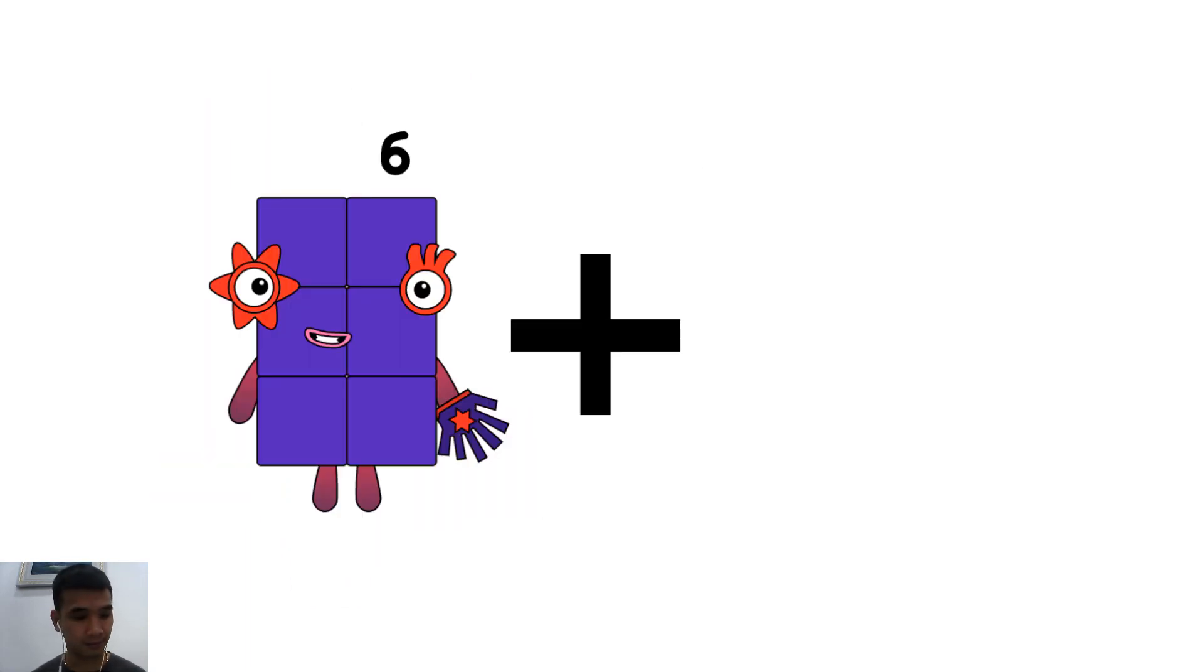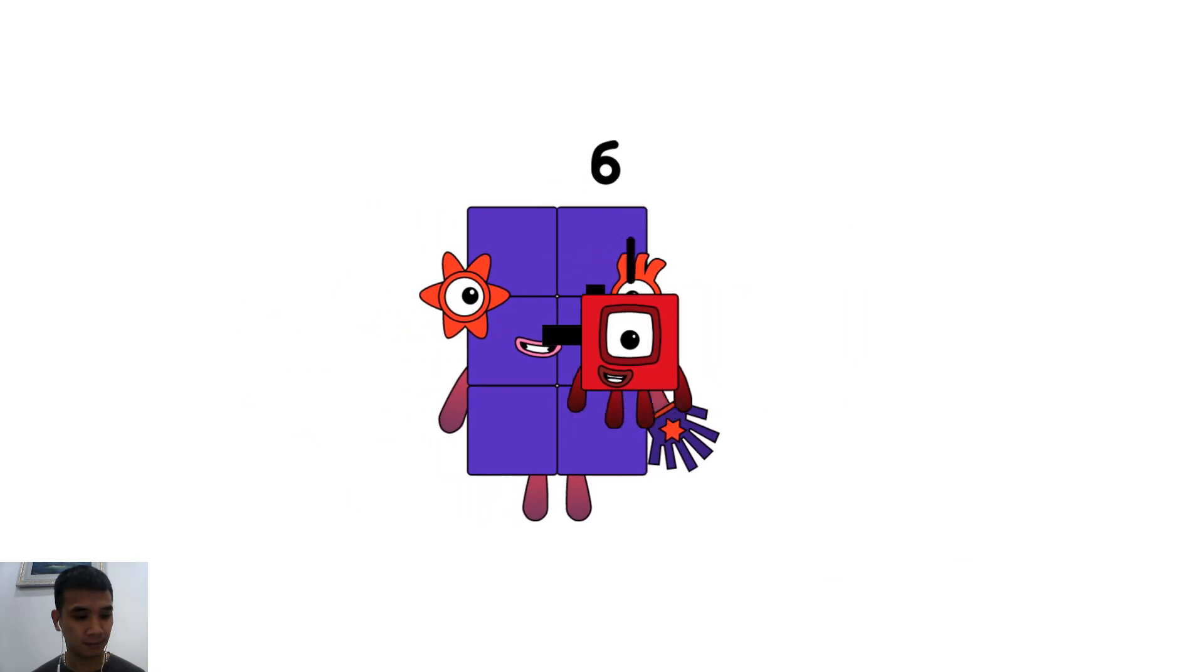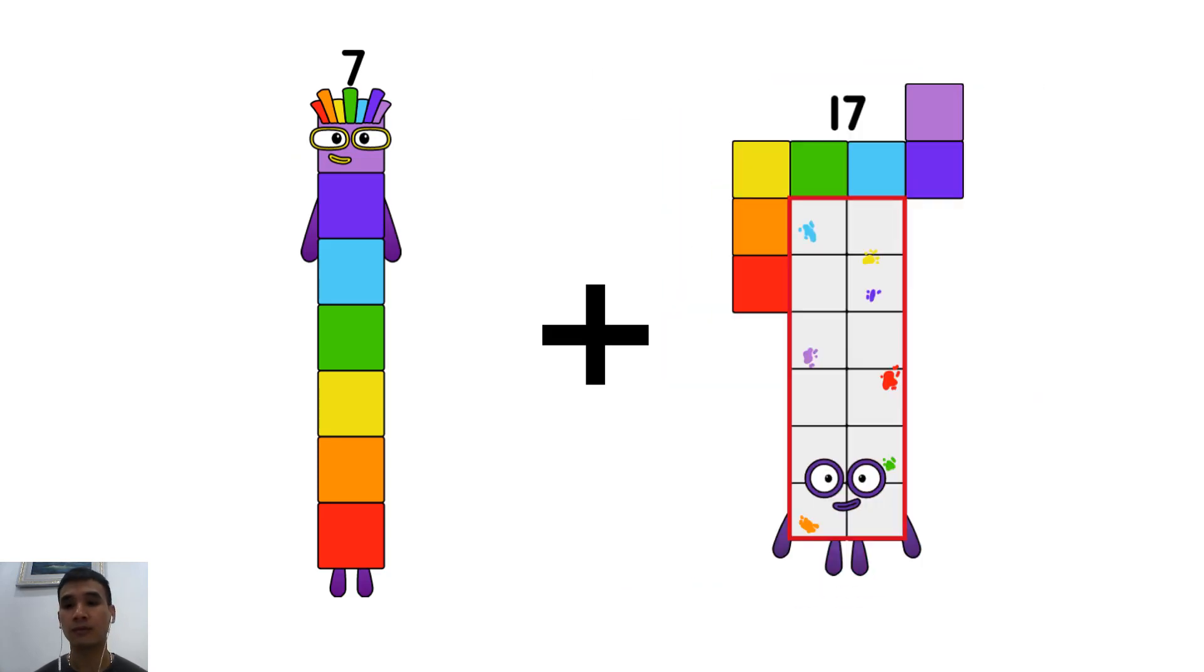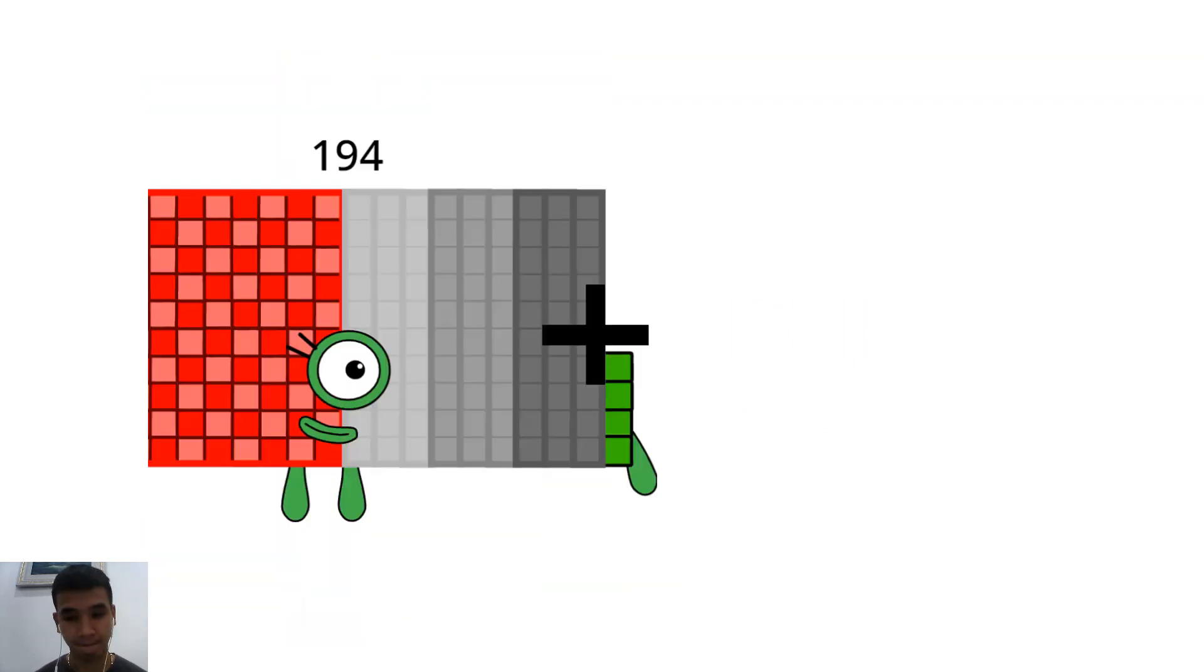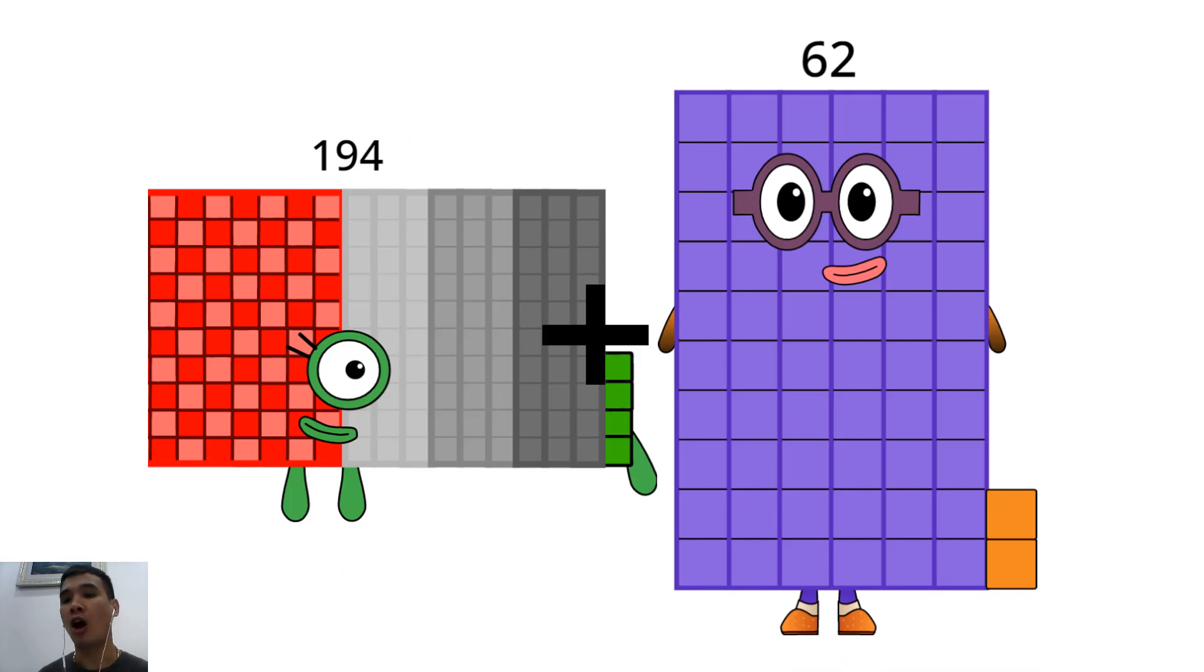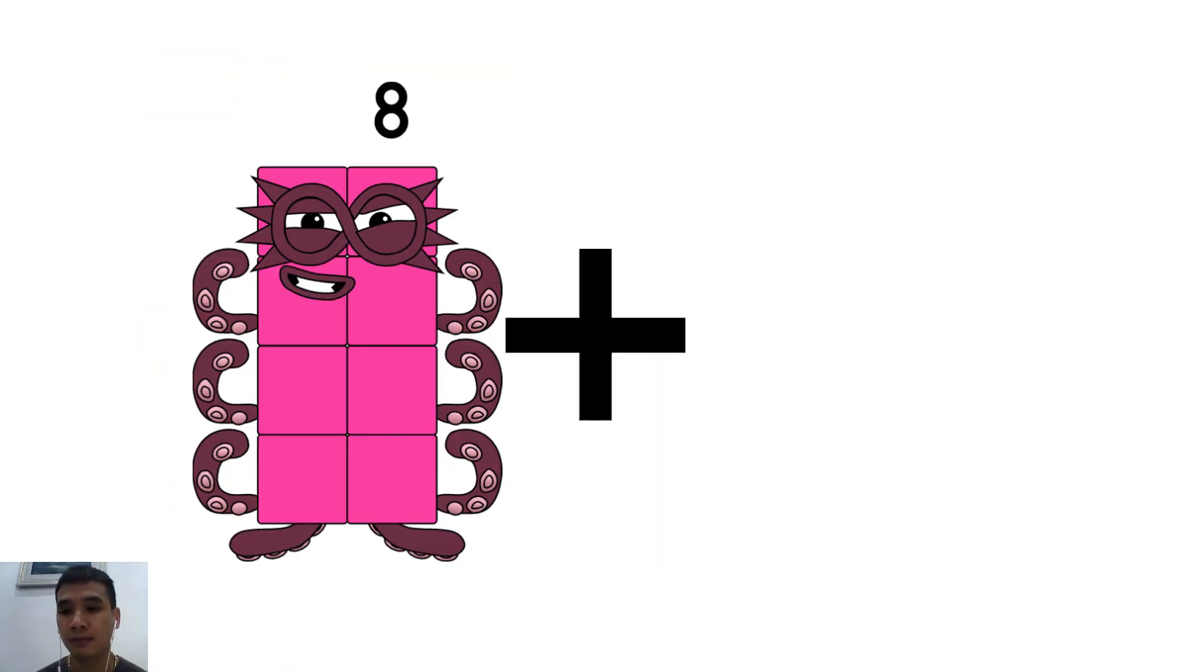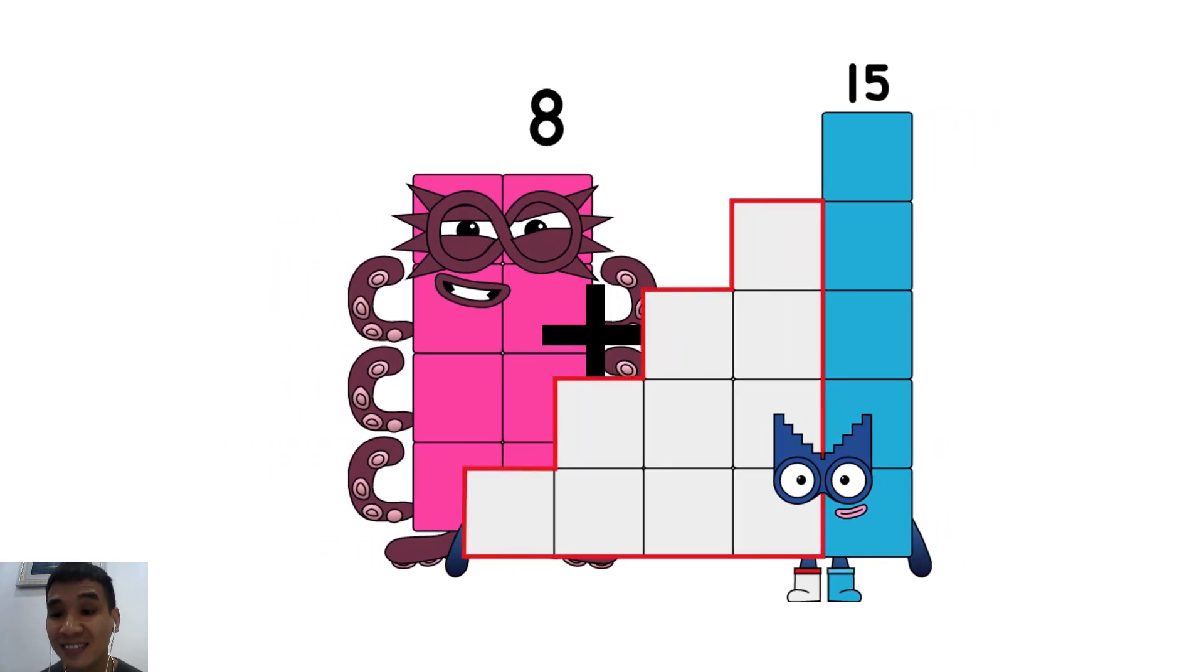6 plus 1 equals 7. 7 plus 1 equals 8. 194 plus 62 equals 256. 8 plus 15 equals 23.